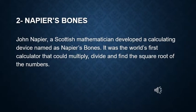The second device is Napier's Bones. It was invented by a Scottish mathematician, John Napier. This device was considered to be the world's first calculator to perform multiplication, division, and find the square root of numbers.